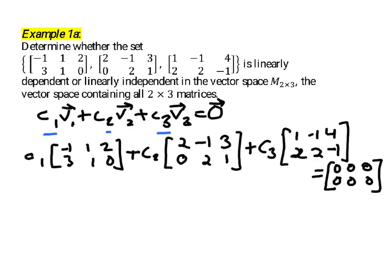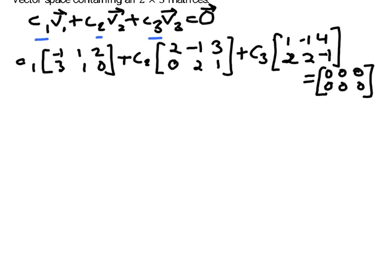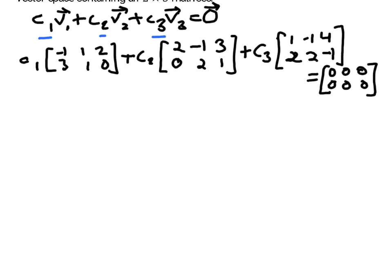We need to distribute each scalar over each entry in its matrix and then add the corresponding entries. Starting with the first row, first column: negative 1 times C1, so negative C1, plus 2C2, plus 1 times C3. Moving to the first row, second column: C1 minus C2 minus C3.